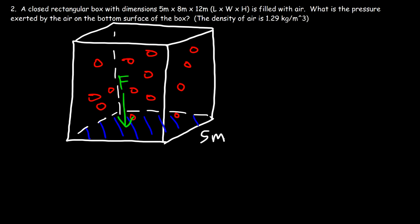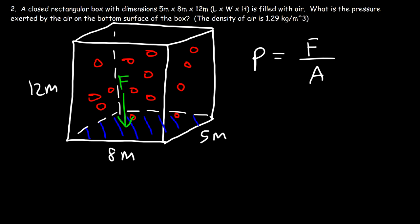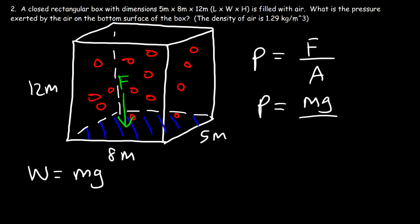The length of the box is 5 meters, the width is 8 meters, and the height is 12 meters. Pressure is force divided by area, and the force is the weight force of the air — weight equals mg. So we replace F with the mass of the air times gravitational acceleration. The mass of a fluid is density times volume, so pressure equals density times volume times g divided by area.